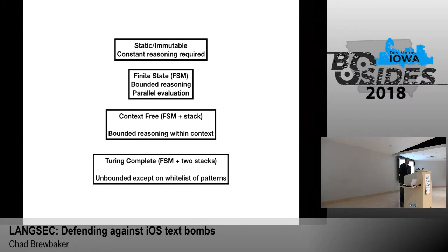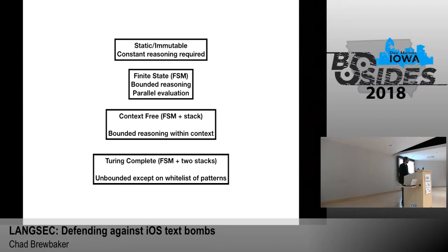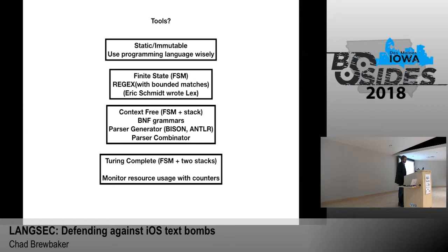Then there's context-free complexity, which is a finite state machine plus a stack to store which state I'm in. That's bounded reasoning as long as I have the context of where I'm at on the stack. When parsing, I have to make sure this stack only grows to a certain size or else it's going to overflow my memory. And then there's the full Turing-complete case, which I can simulate with just a finite state machine and two stacks — sometimes called a 'weird machine' — where you can compute anything with it. For those, we try to whitelist patterns that we know are going to halt and use finite resource bounds.